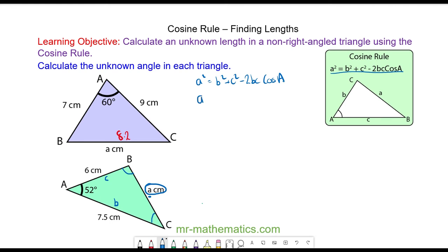So a squared, a is what we're trying to find, is equal to b squared which is 7.5 squared plus the 6 squared minus 2 times 7.5 times 6 times the cosine of 52.